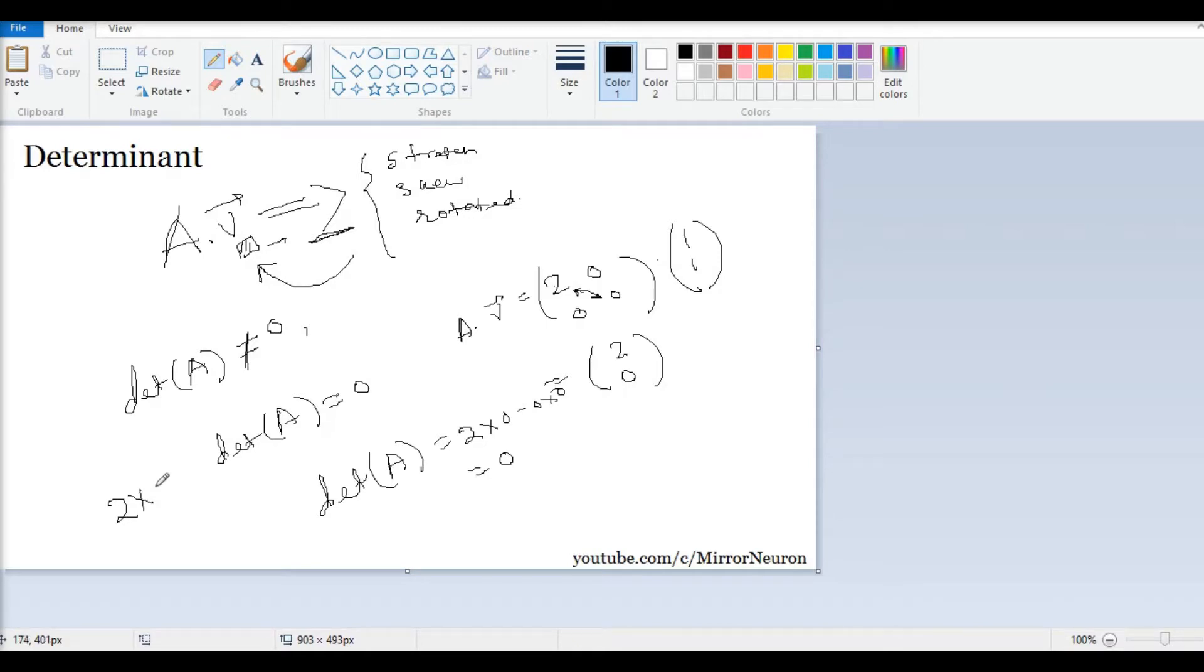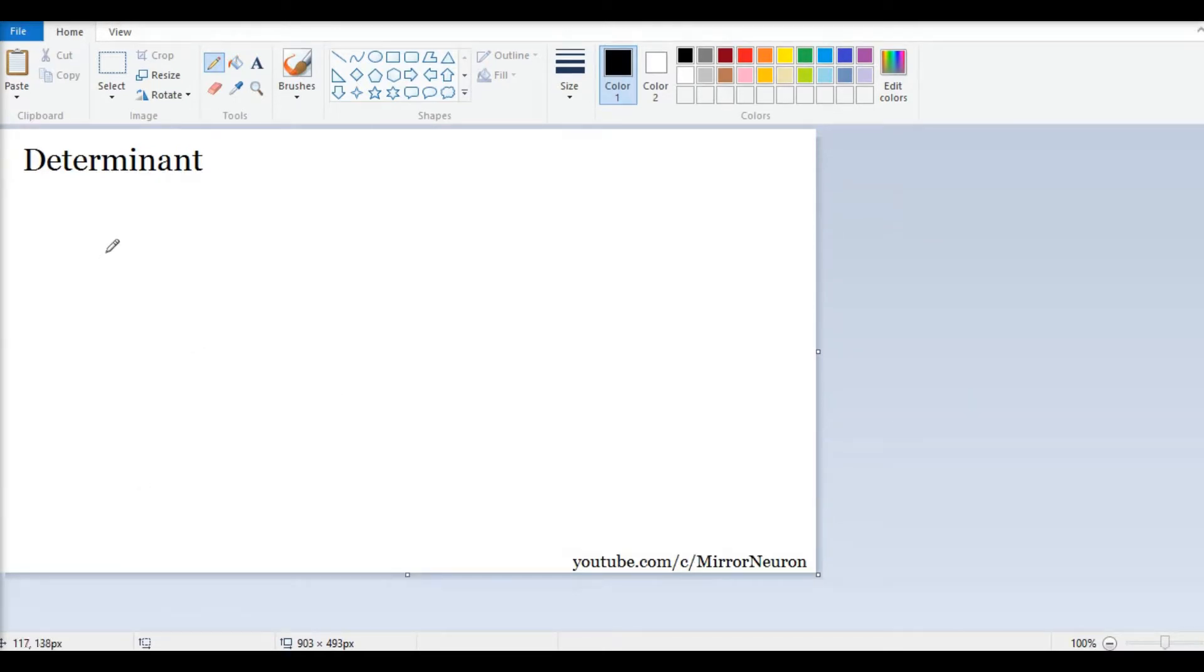So what happens when you go to some higher order matrix? Let's look at the general form. Say I have a matrix 2 by 2, represented by A equals a, b, c, d.